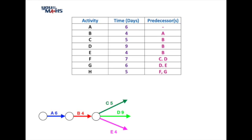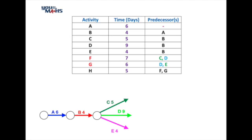The next thing to consider is we have a possible conflict with our predecessors for task F and G. F has got predecessors of C and D, and G's got predecessors of D and E, so there's a little bit of a mix going on.